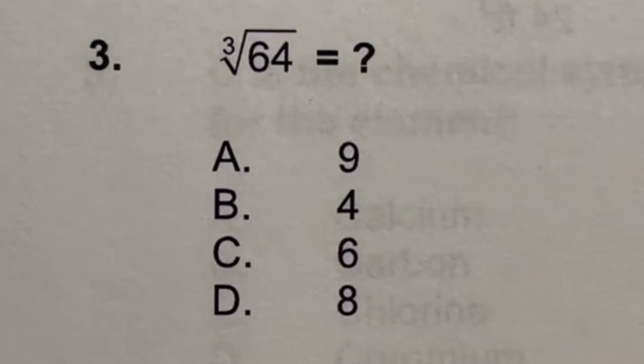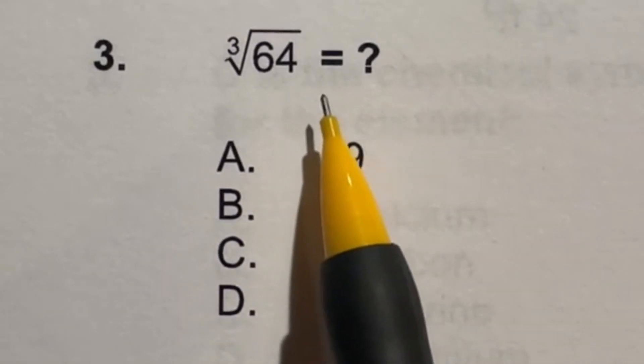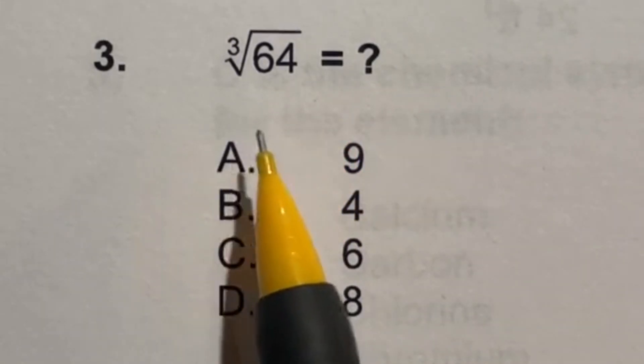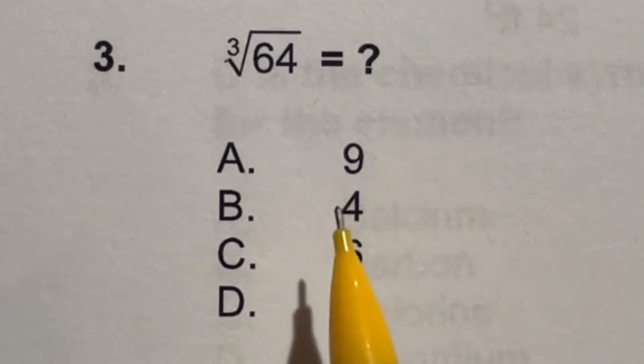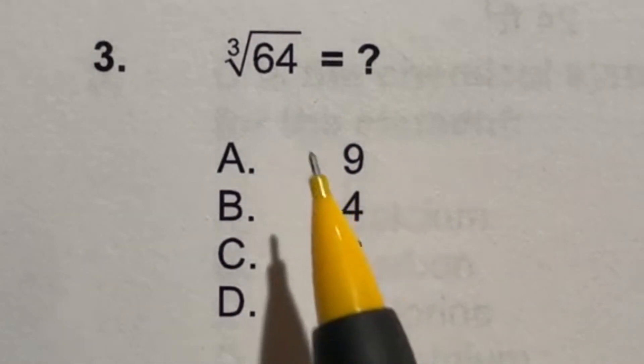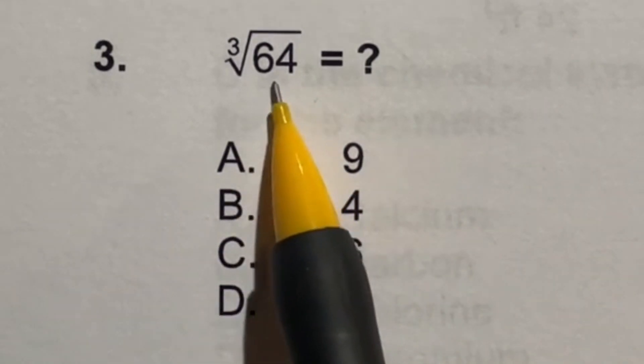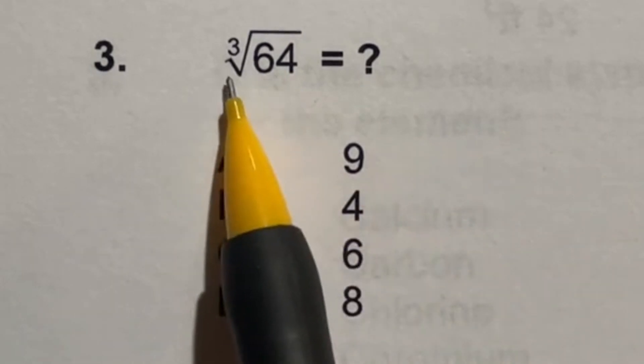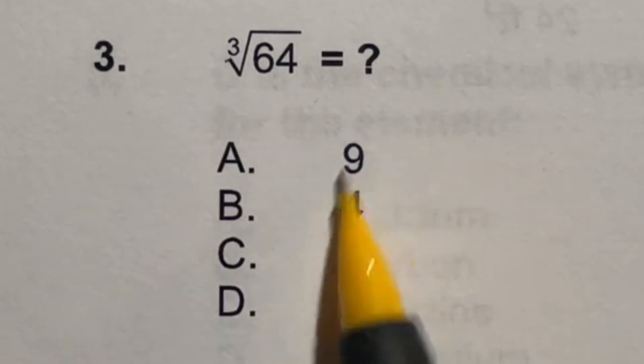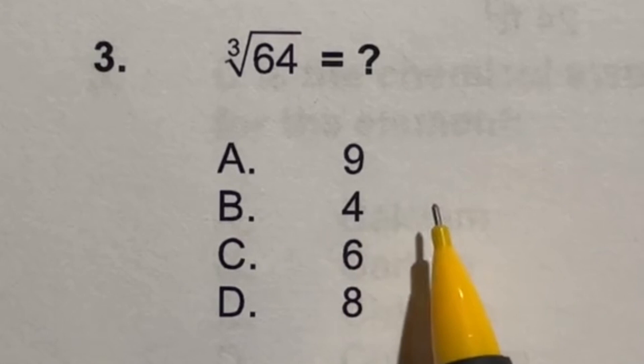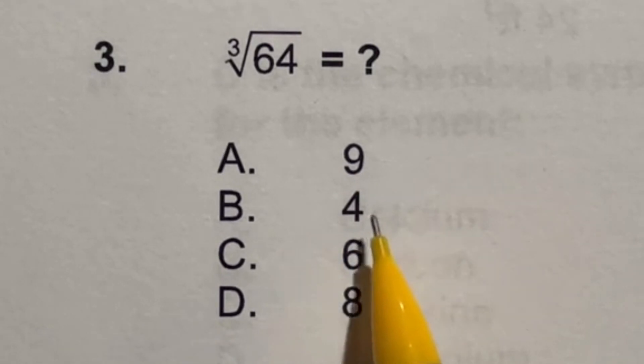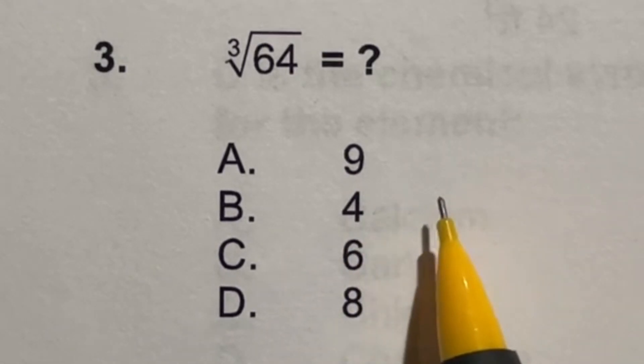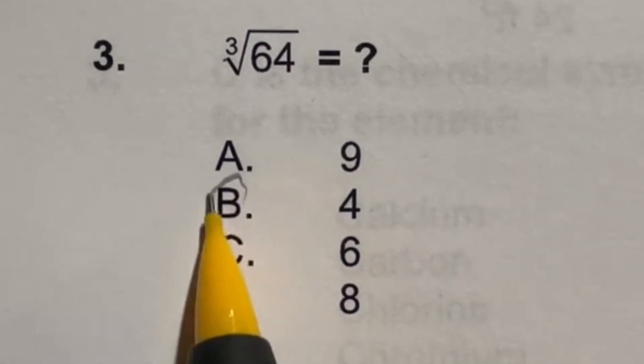Number 3 says the cube root 64. Well, cube root can be somewhat difficult because there's no mathematical way to just undo it. Instead, you just have to know your multiplication tables and kind of multiply yourself up to the 64. So cubing something, the opposite of this, would mean taking one of these numbers and multiplying by itself three times. So 4 times 4 times 4 or 9 times 9 times 9. Knowing this, if I go through these quickly, starting at the smallest, 4 times 4 is 16 times another 4 would indeed be 64. So our answer here is B.